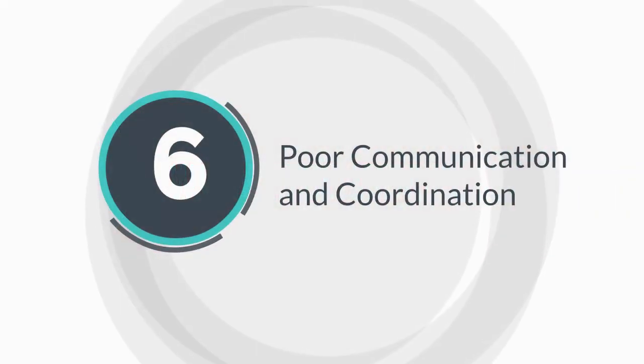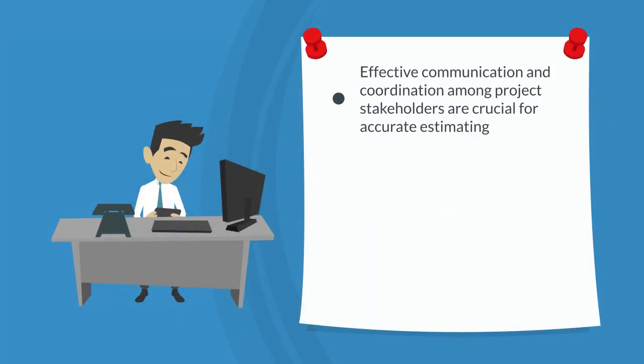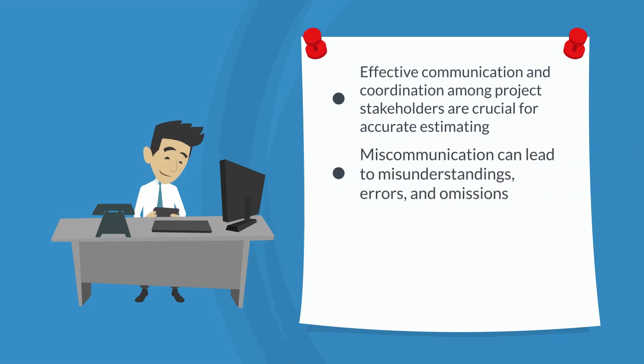Six: Poor communication and coordination. Effective communication and coordination among project stakeholders are crucial for accurate estimating. Miscommunication can lead to misunderstandings, errors and omissions.